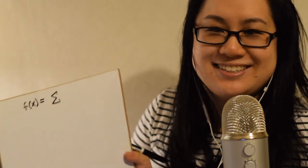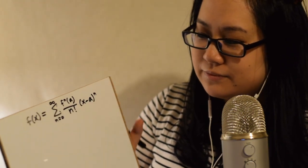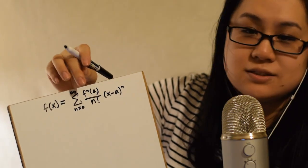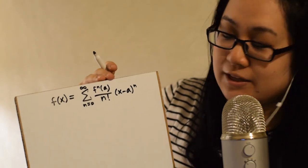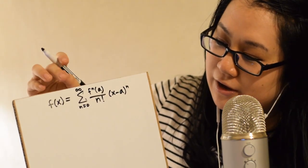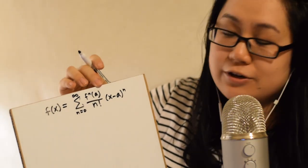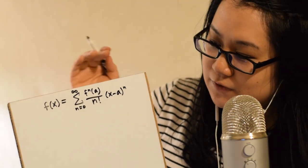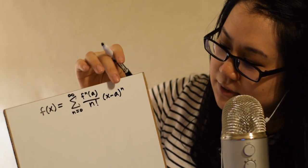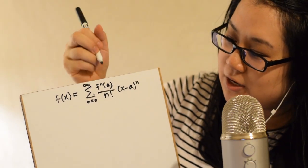If we have f of x, a function of x, we're going to use sigma notation. The formula looks like this: we have a sum — sigma — and then we have this f superscript n of a, which is the nth derivative of f of x evaluated at x equals a. So whatever your constant a is, you just put that into all the x's once you find the nth derivative.